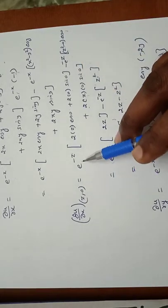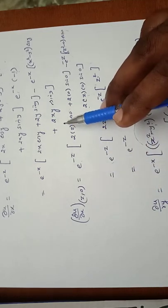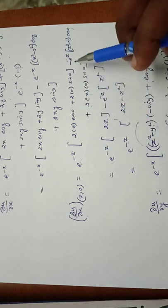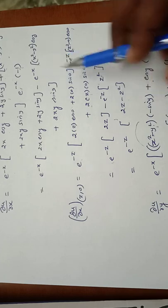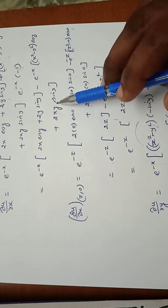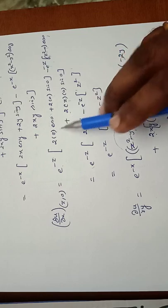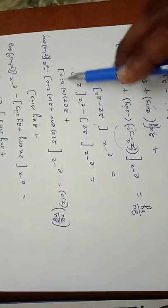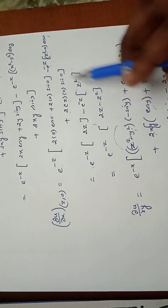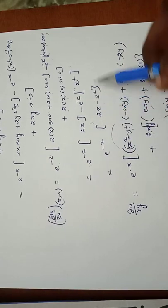To evaluate ∂u/∂x at (z, 0), substitute x = z and y = 0. With cos(0) = 1 and sin(0) = 0, the expression simplifies: e^(-z) into 2z·cos(0) gives 2z, and the sin(0) terms vanish. Minus e^(-z) into z²·cos(0) gives z². So ∂u/∂x at (z, 0) equals e^(-z)(2z - z²).